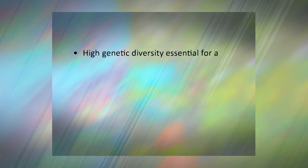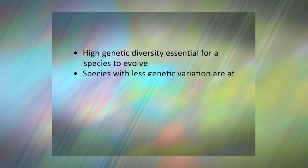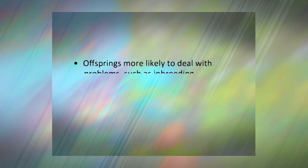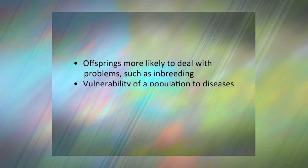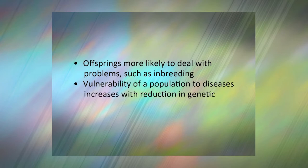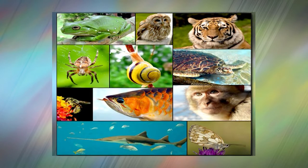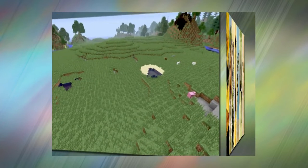High genetic diversity is also essential for a species to evolve. Species that have less genetic variation are at a greater risk — with very little gene variation within the species, healthy reproduction becomes increasingly difficult and offspring are more likely to deal with problems such as inbreeding. The vulnerability of a population to certain types of diseases can also increase with reduction in genetic diversity. Genetic diversity itself can be measured at many different levels including population, species, community and biome depending on what is being examined and why, but genetic diversity is important at each of these levels.